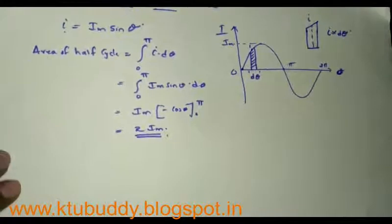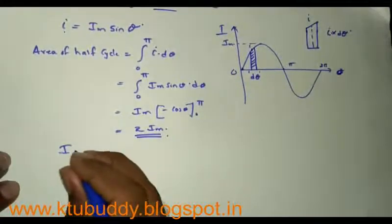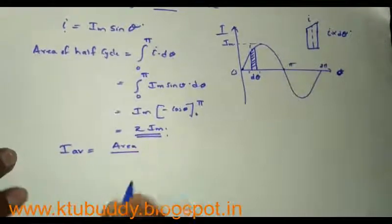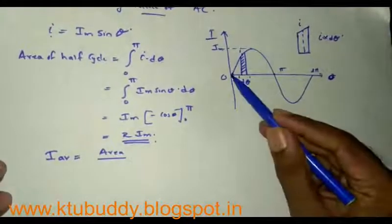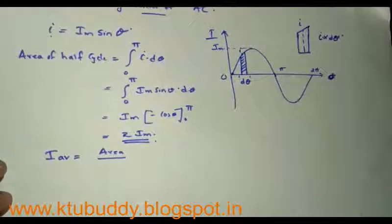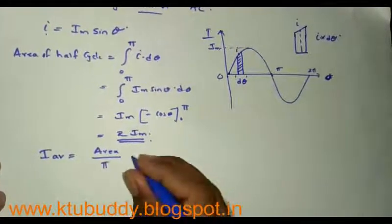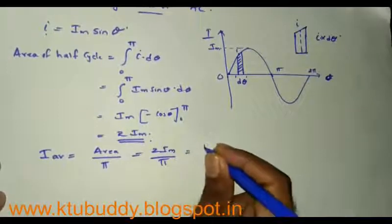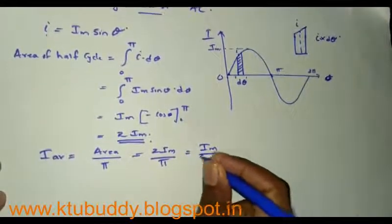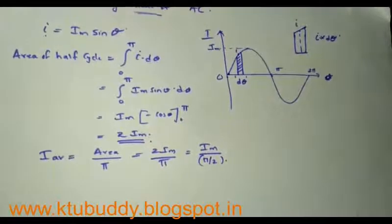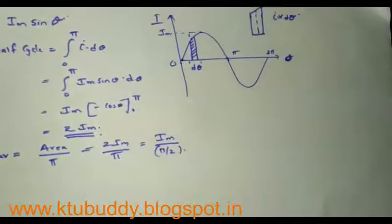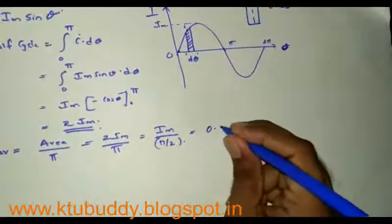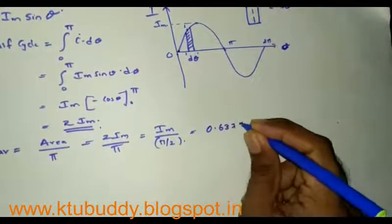To determine the average value, I average equals area divided by base length. The base length of this half cycle equals π radians. Therefore, I average equals 2Iₘ divided by π, which equals Iₘ divided by π/2. So the half cycle average value of alternating current is given by 2Iₘ/π, and that is equal to 0.637 Iₘ.